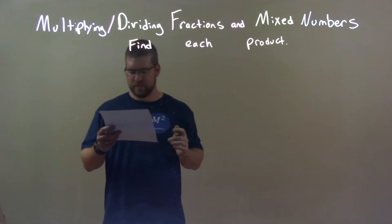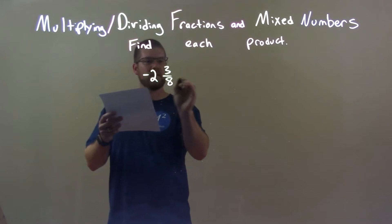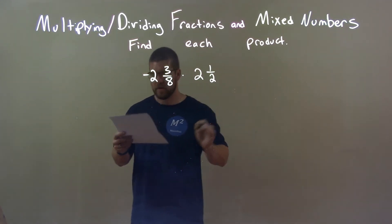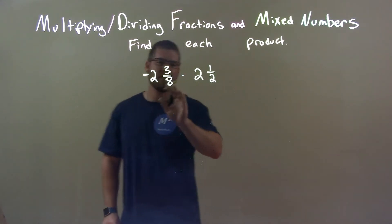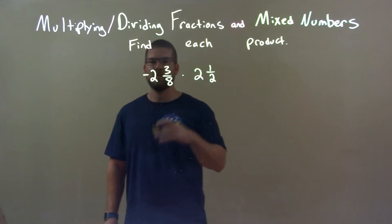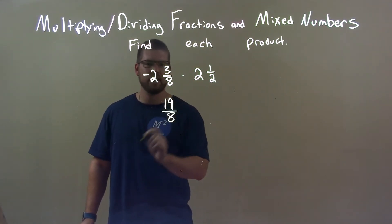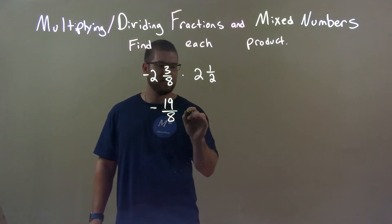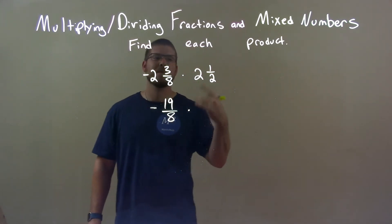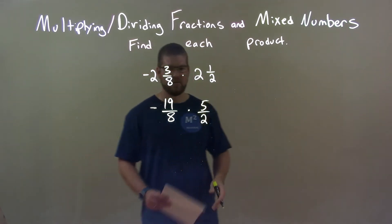So, if I was given these numbers, negative 2 and 3 eighths, times 2 and 1 half. Well, first thing, I want to convert each one of these to an improper fraction. 8 times 2, 16, plus 3 is 19. So we have 19 over 8. Keep the negative. Multiply it here. 2 times 2 is 4, plus 1 is 5. So we have 5 over 2, 5 halves here.